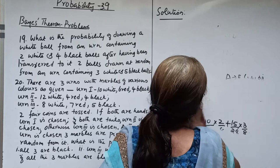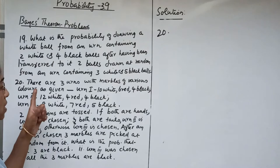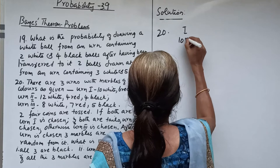That was problem number 20. Now the last problem on Bayes' theorem. There are 3 urns with marbles of various colours: urn 1 has 10 white, 6 red, 4 black; urn 2 has 12 white, 4 red, 4 black; and urn 3 has 8 white, 7 red, 5 black.